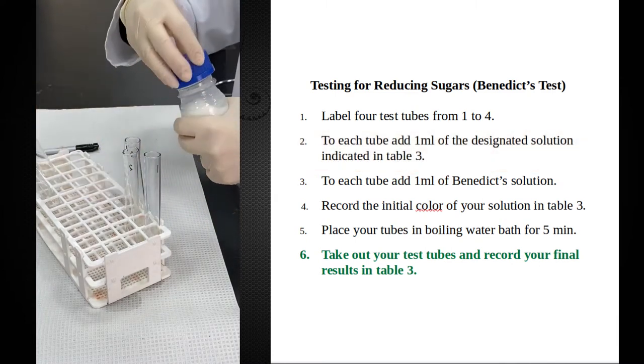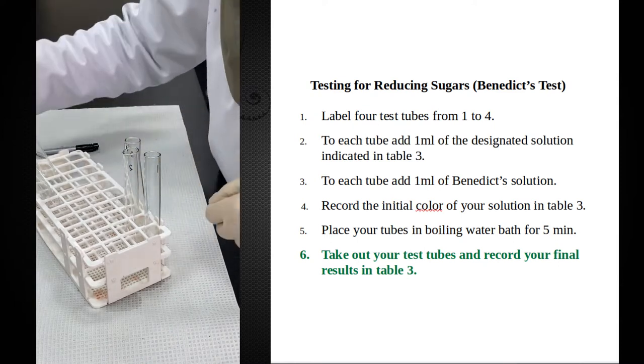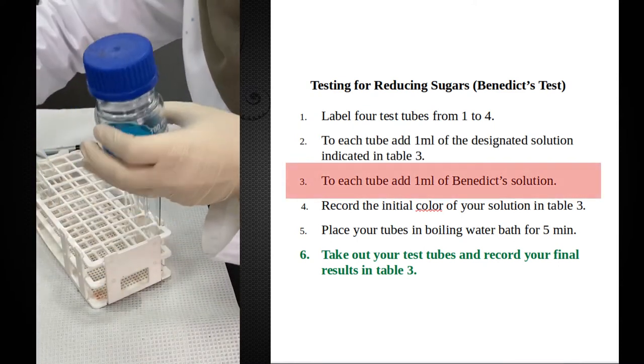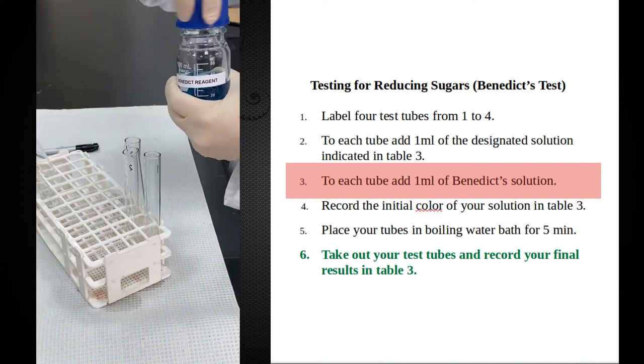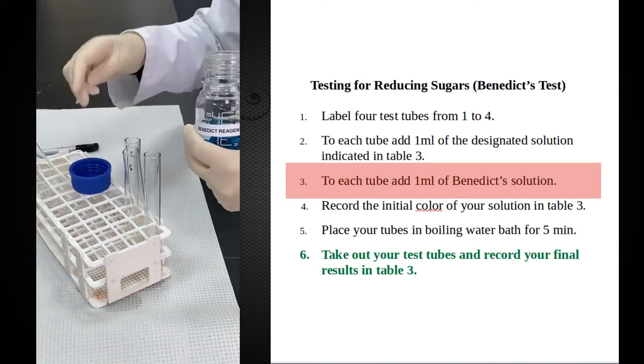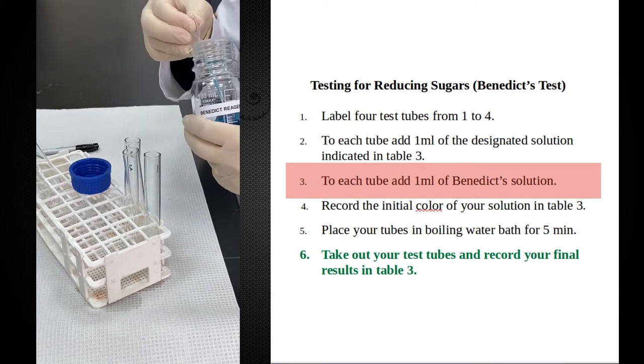With a clean dropper pipette, I will add one ml of Benedict's reagent, which is made of a copper sulfate solution. One ml in each test tube.